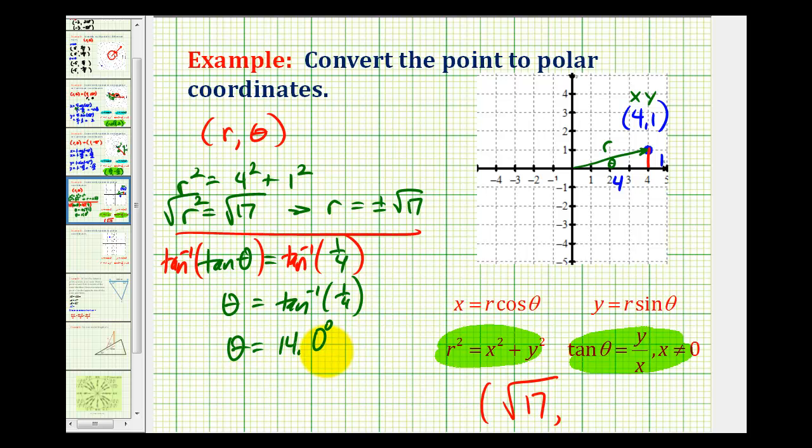Notice how 14 degrees would be in the first quadrant, passing through the given point, which is what we need since we have a positive value for r.